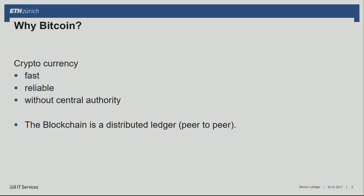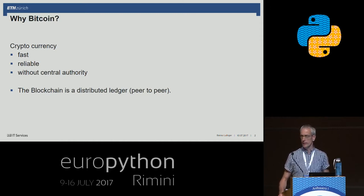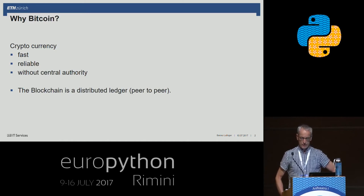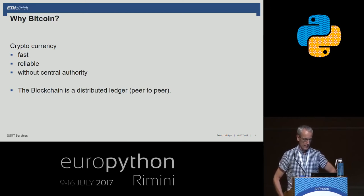Most of you know that Bitcoin is a cryptocurrency. It's fast, reliable, and most of all it works without central authority. This is a good thing because a bank offers a single point of failure. It can go down or the database of the bank can go down, and that poses a huge failure and costs a lot.